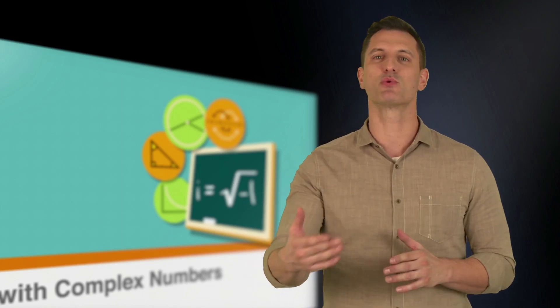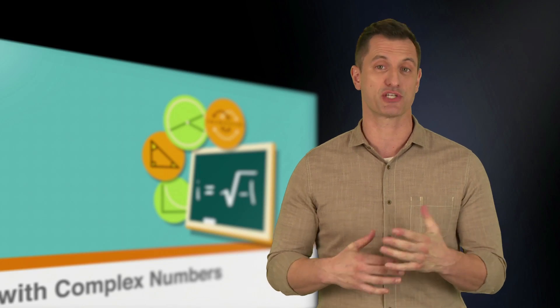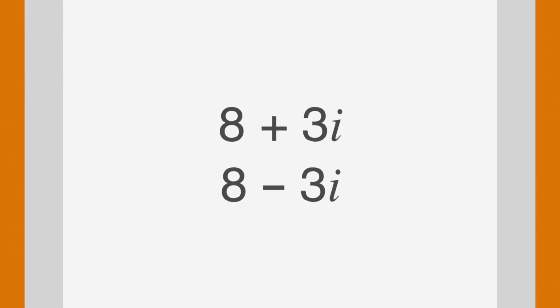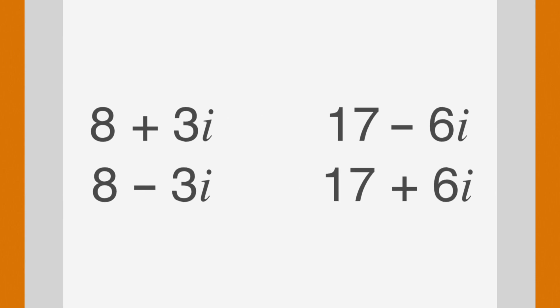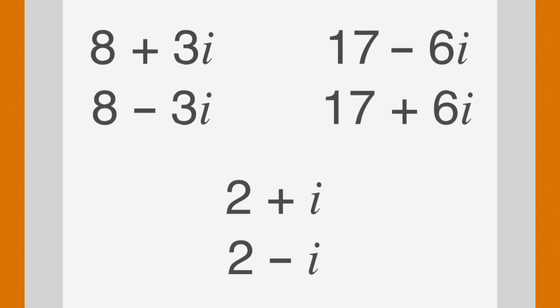To make sure you've got it, let's do a quick bit of practice on finding the conjugate. The conjugate of 8 plus 3i is 8 minus 3i. The conjugate of 17 minus 6i is 17 plus 6i. And the conjugate of 2 plus i is 2 minus i.